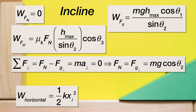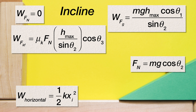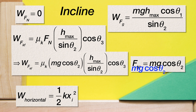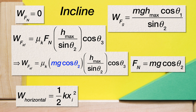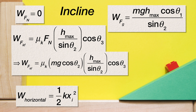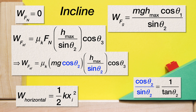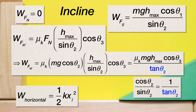Substituting back, the work done by kinetic friction equals the coefficient of kinetic friction times mass times g times cosine of theta 2 times height maximum divided by sine of theta 2, all times cosine of theta 3. Because cosine of theta 2 divided by sine of theta 2 equals one over tangent of theta 2, we can substitute tangent of theta 2 into the equation.